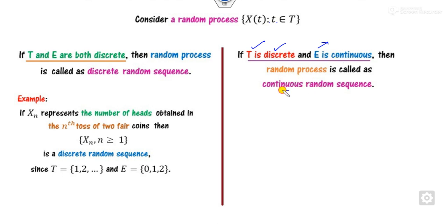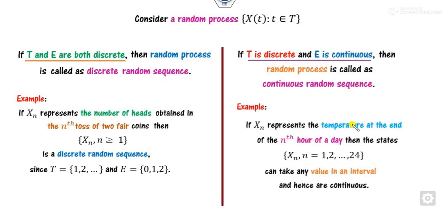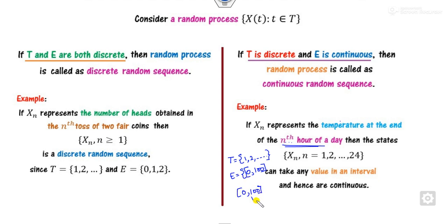If the index T is discrete while E is continuous, we call it a continuous random sequence. For example, the temperature at the end of the nth hour — the time period n = 1, 2, ... is discrete, but the temperature outcome can range from 0 to 100 or over some interval, making it a continuous random variable. Therefore, whenever E is continuous and T is discrete, we call it a continuous random process.